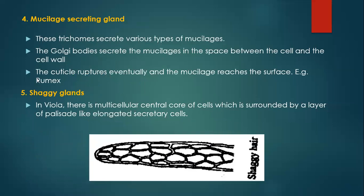Mucilage-secreting glands: these trichomes secrete various types of mucilages. The Golgi bodies secrete the mucilages into the space between the cell wall and the cuticle. The cuticle eventually ruptures and the mucilage reaches the surface — for example, in Rumex. In the case of shaggy glands, as in Viola, there is a multicellular central core of cells surrounded by a layer of palisade-like elongated secreting cells.